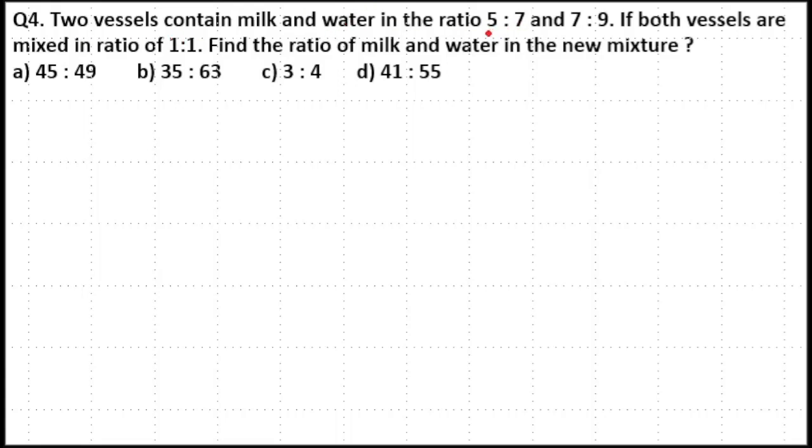Two vessels contain milk and water in the ratio 5:7 and 7:9. If both vessels are mixed in a ratio of 1:1, find the ratio of milk and water in new mixture.